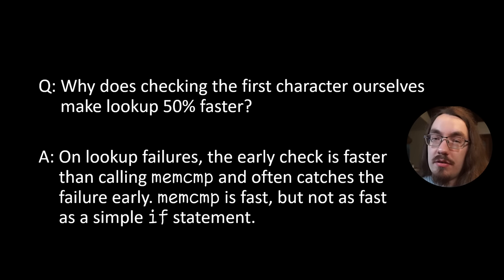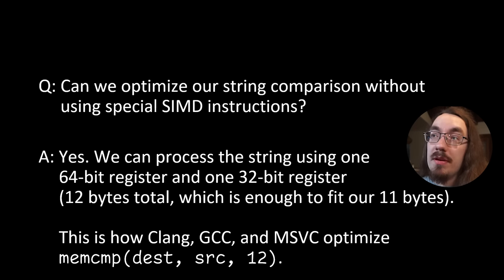Now, why did checking the first character ourselves make a lookup 50% faster? I'm not 100% sure on this, but my guess is because of the early check on lookup failures, which are 80% of the time, we could avoid calling memcomp. And memcomp is pretty cheap, but it's not as cheap as an if statement.